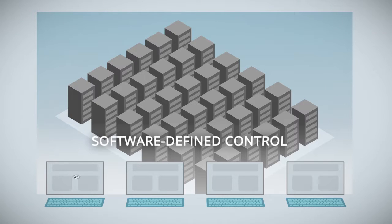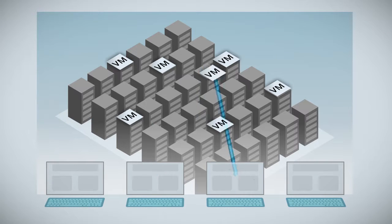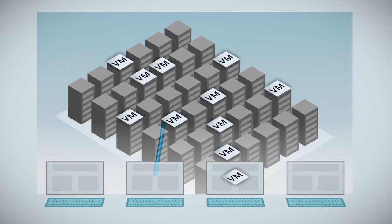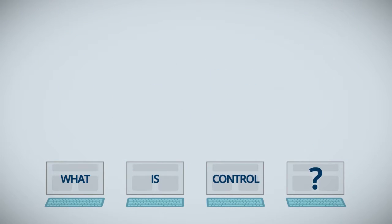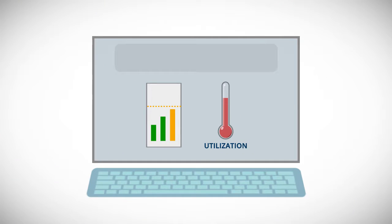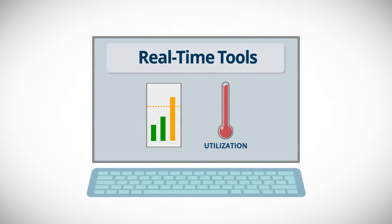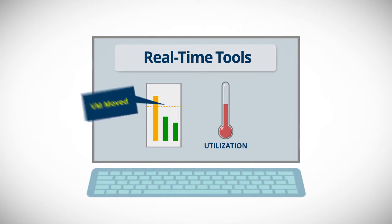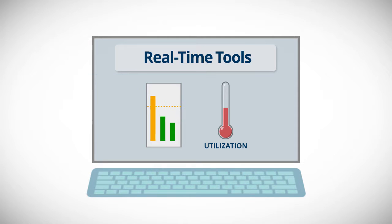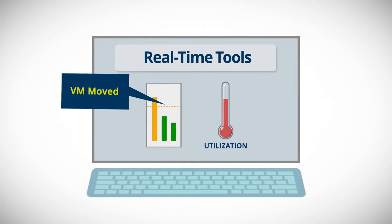Achieving software-defined control over infrastructure provides unprecedented levels of automation in IT operations. But automation requires control. And what is control? And what kind of control do you really need? Some software vendors claim to give you the control you need because their tools respond in real time to issues that arise in the environments. But that form of reactive control is extremely limited.